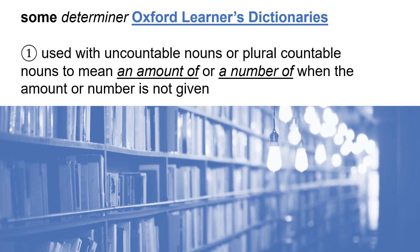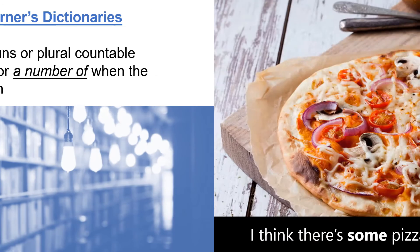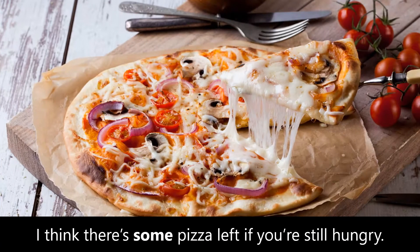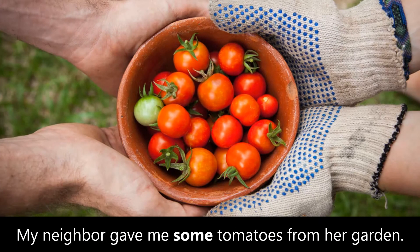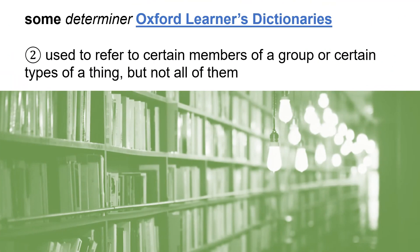Some is used with uncountable nouns or plural countable nouns to mean 'an amount of' or 'a number of' when the amount or number is not given. For example: 'I think there's some pizza left if you're still hungry.' The amount of pizza that is left is not given — we don't know how much pizza is left, only that some is left.